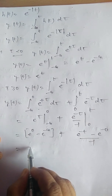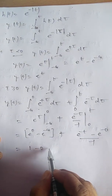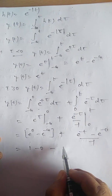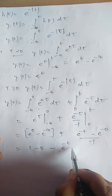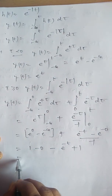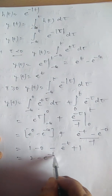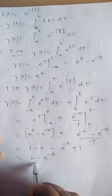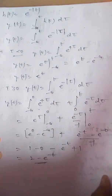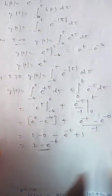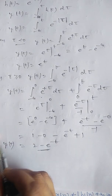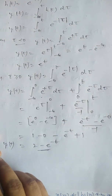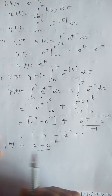Since e^0 = 1, this simplifies to 1 − (e^(−t) − 1) = 2 − e^(−t). So the step response of h(t) = e^(−|t|) is y(t) = 2 − e^(−t) for t ≥ 0.